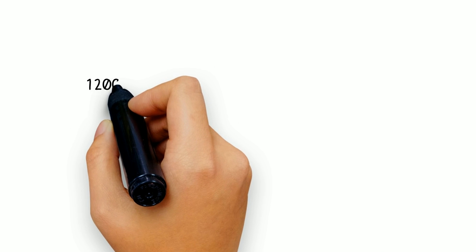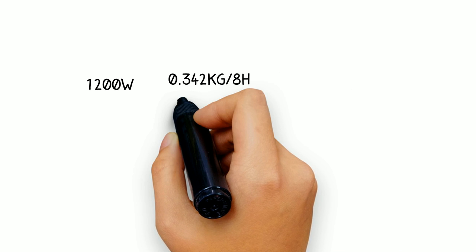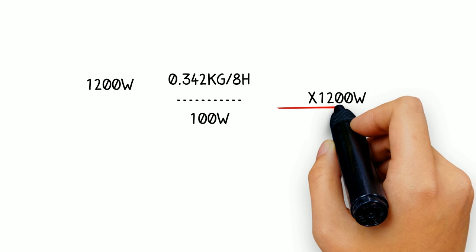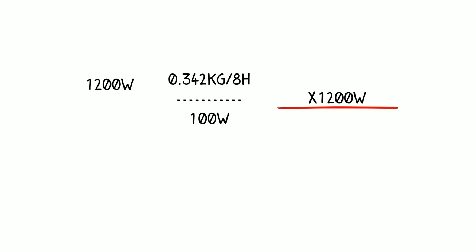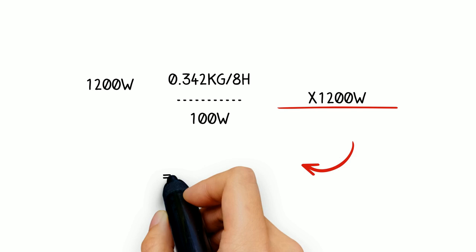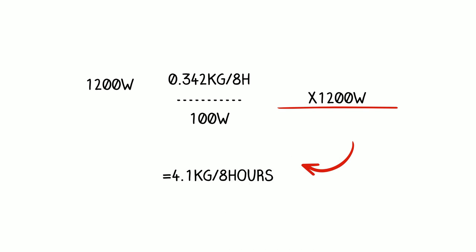Now with every old calorimeter comes an air conditioner which is typically 1200 watts of load. So let's do the same calculation again. 0.342 kilograms for eight hours divided by 100 times 1200 watts of load will give you a usage of 4.1 kilograms of coal for eight hours.